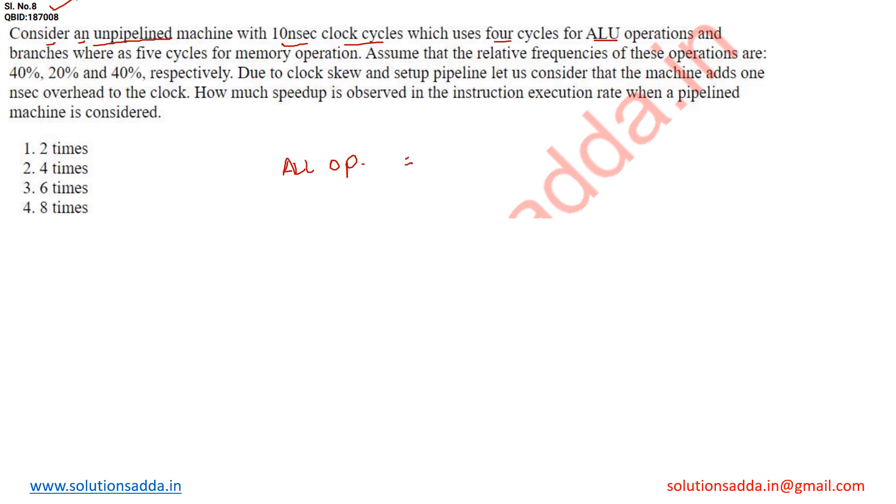ALU operations take 4 cycles and branches also take 4 cycles, whereas memory operations take 5 cycles. For memory operation we'll write 5 cycles.